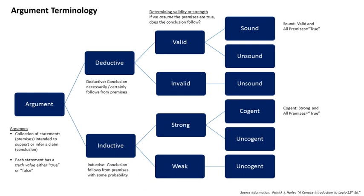A deductive argument is one that, if valid, has a conclusion that is entailed by its premises. In other words, the truth of the conclusion is a logical consequence of the premises — if the premises are true, then the conclusion must be true. It would be self-contradictory to assert the premises and deny the conclusion, because the negation of the conclusion is contradictory to the truth of the premises.